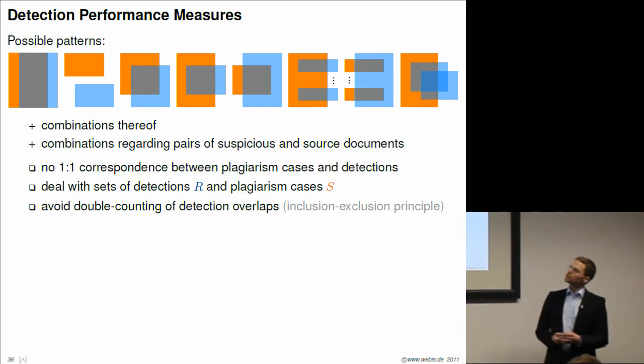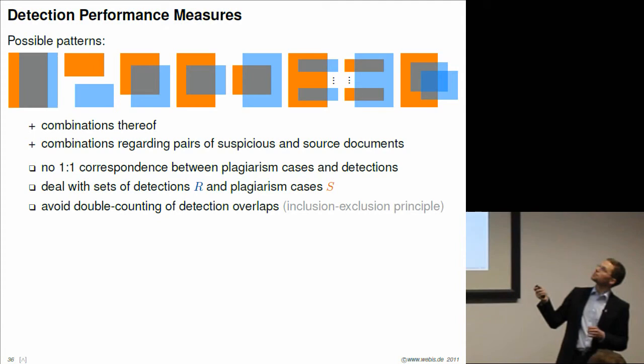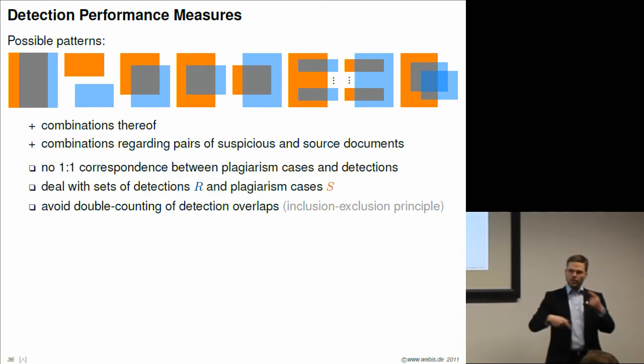From these three patterns which we observed with real plagiarism detectors, we have derived the following conclusions. We cannot assume a one-to-one correspondence between plagiarism cases. This is a long plagiarism case, but it has been detected many times over. On the other hand, this is a long detection which detects many different plagiarism cases. The measures have to deal with sets of detections and sets of plagiarism cases. Finally, we have to avoid double counting of detected characters in our measures, simply because there may be detections which overlap to some extent.